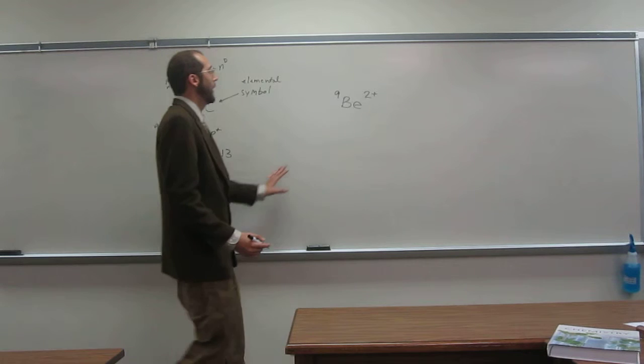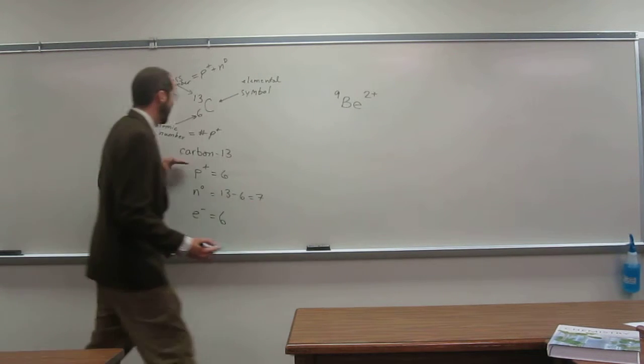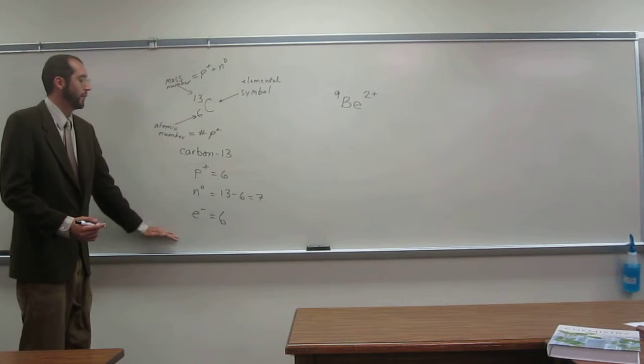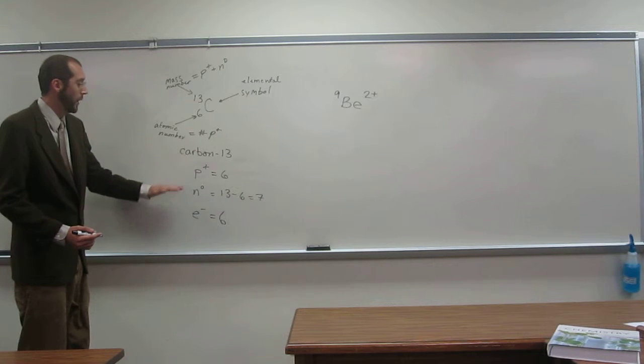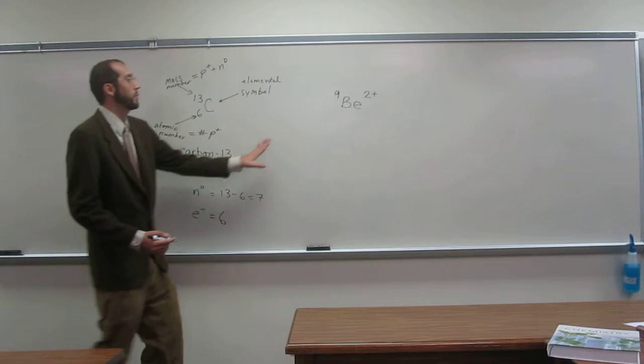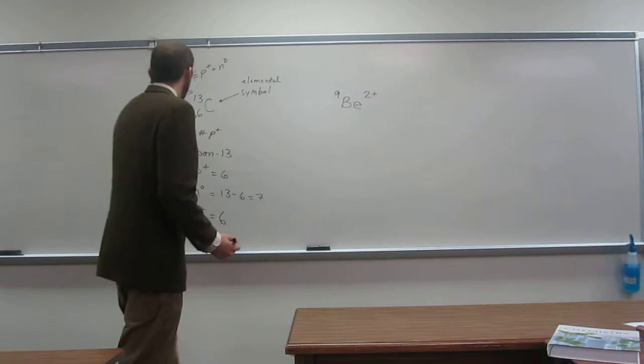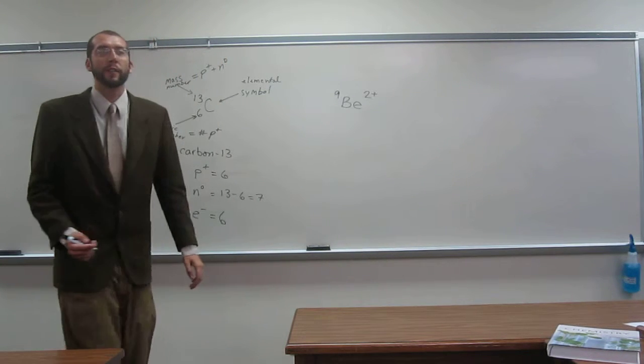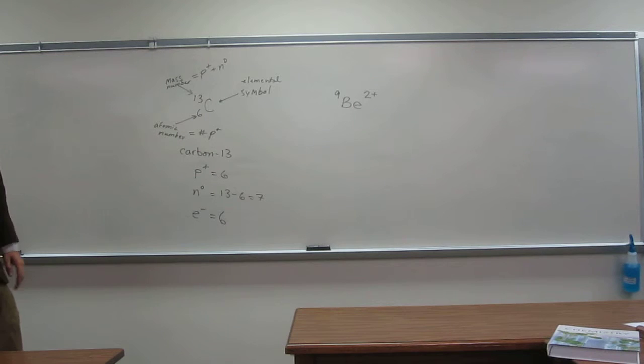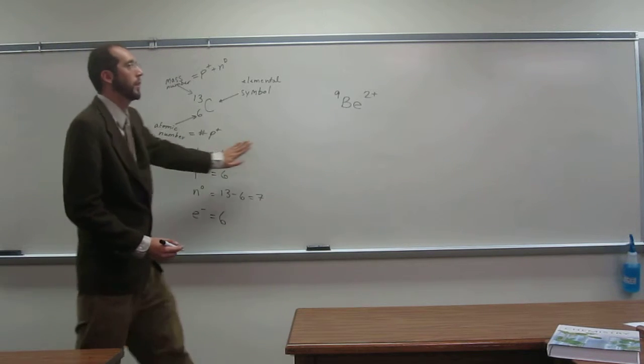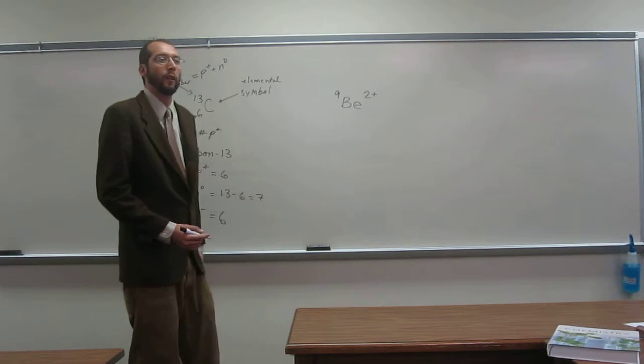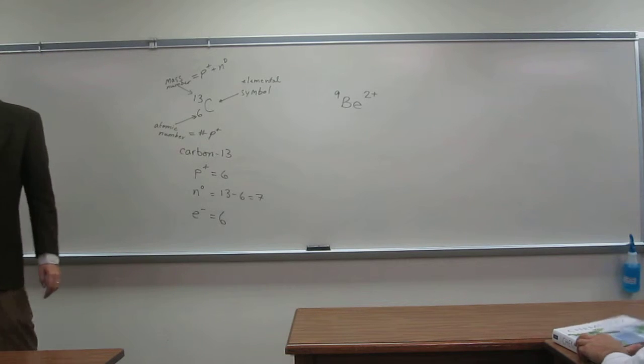So let's attempt to figure all this stuff out - the name, protons, neutrons, electrons - just by looking at this symbol. Is everybody okay with that? So what would we call this atom? This one's called carbon-13. What would this one be called? Beryllium-9.